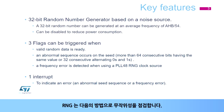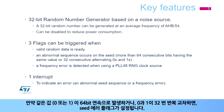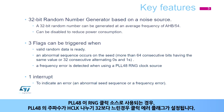The RNG verifies the randomness of the provided data. If more than 64 consecutive bits have the same value, 0 or 1, or there are more than 32 consecutive alternating 0s and 1s, a seed error current status flag is set. When a PLL48 RNG clock source is used, a clock error current status flag is set if the PLL48 clock frequency is less than HCLK divided by 32.